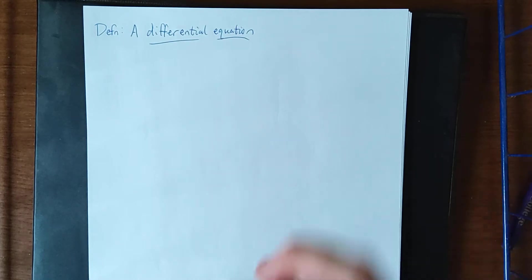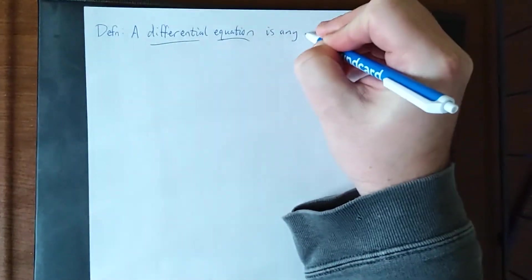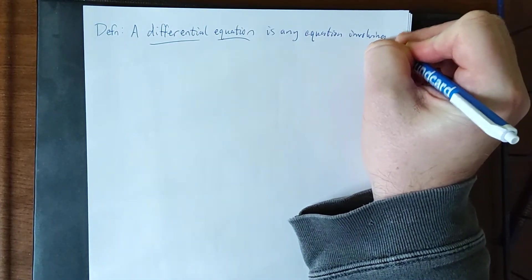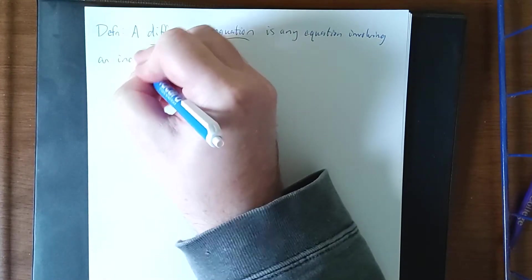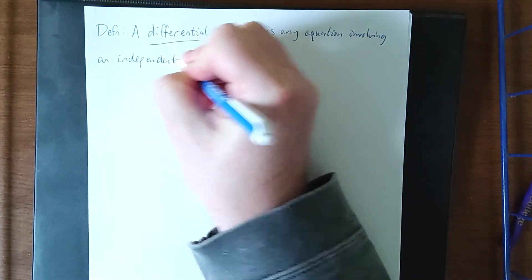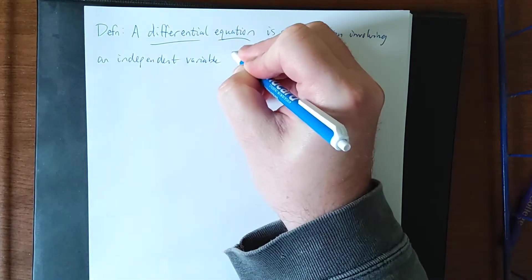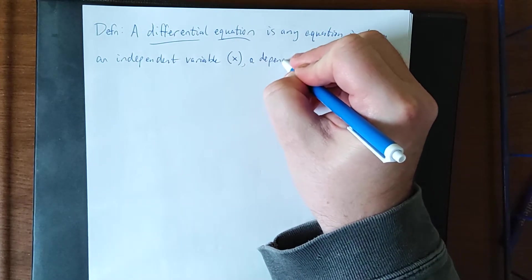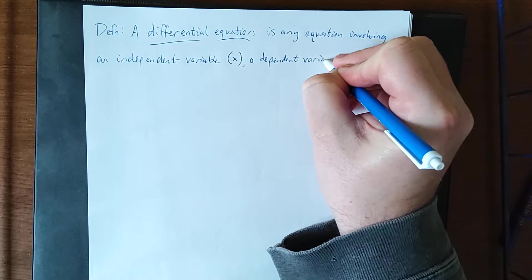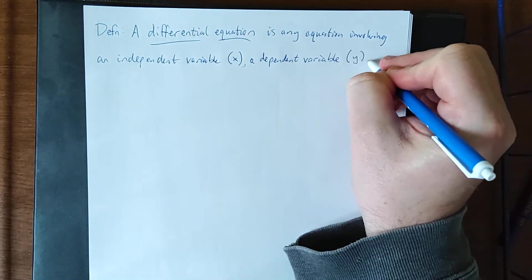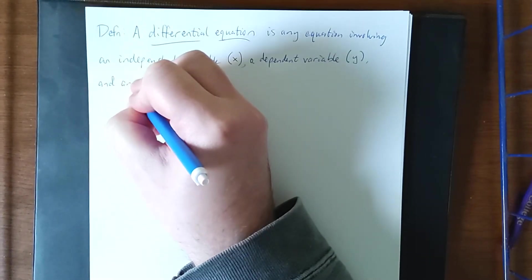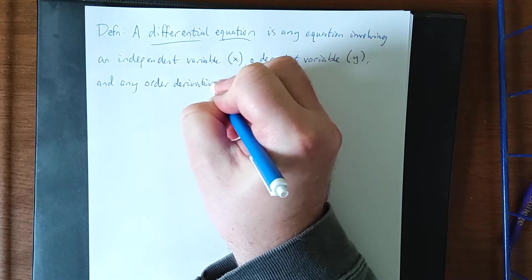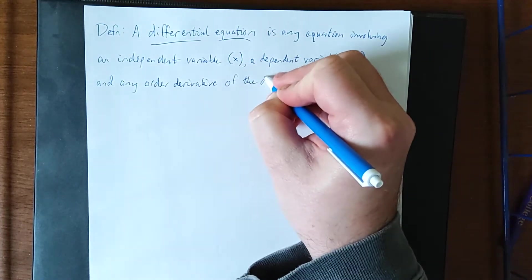So a differential equation is any equation involving an independent variable. Now for us, usually that independent variable is going to be x. A dependent variable, for us, usually that dependent variable is going to be y.